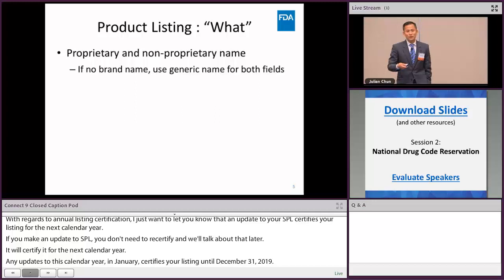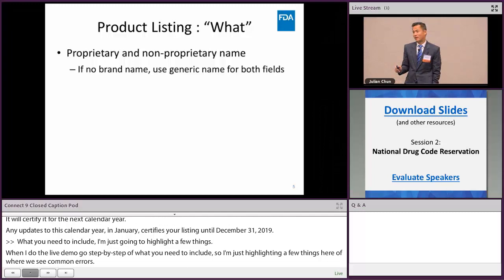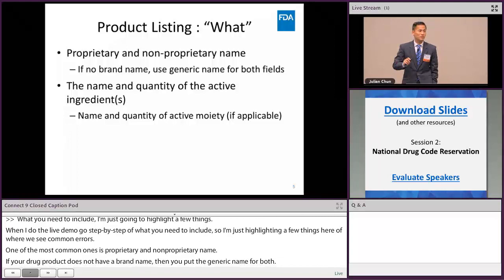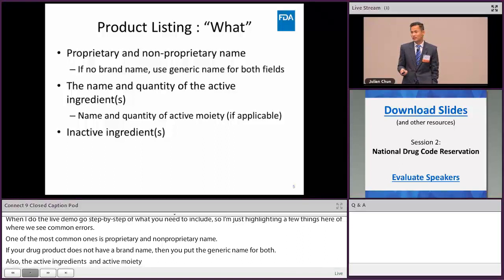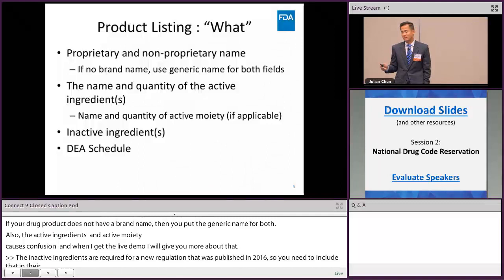What you need to include — I'll highlight a few things where we see common errors. One of the more common ones is proprietary and non-proprietary names. If your drug product does not have a brand name, put the generic name in both fields. The active ingredients and active moiety section causes some confusion, which I'll explain more during the live demo. Inactive ingredients are required now per the 2016 regulation. The DEA schedule — only add that if the drug has a DEA schedule; otherwise leave it blank.